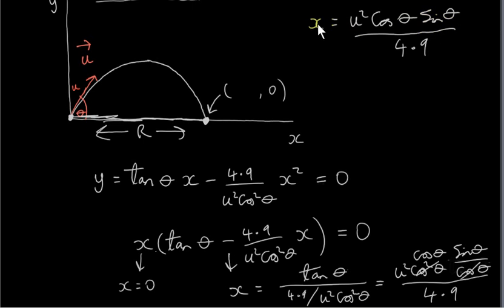So for different values of theta, we're going to get different values for x. And x means the range in this case, so I could just write r here. So the x value we're talking about is the range of this trajectory. For different values of theta, we'll get different values of r. The question is, what value of theta maximizes r?